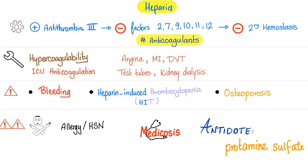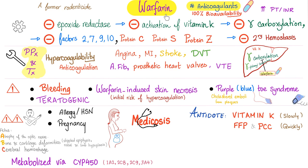Warfarin was historically a rodenticide used to kill rats via bleeding. It has 100% bioavailability and prolongs PT-INR. Mechanism of action: it inhibits epoxide reductase, which inhibits vitamin K activation, which inhibits gamma glutamyl carboxylase and the process of gamma carboxylation, resulting in inhibition of factors 2, 7, 9, and 10, as well as protein C, S, and Z — thereby inhibiting secondary hemostasis.